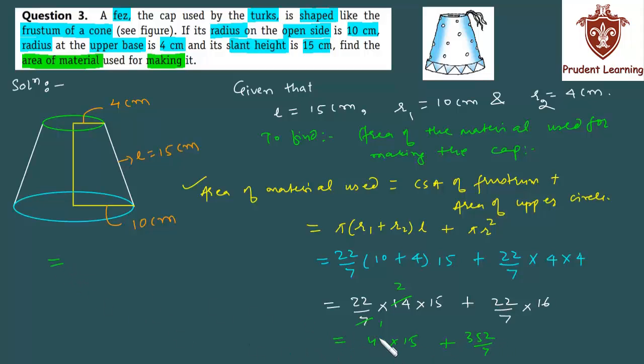Now solving this: 44 × 15 is 660 and 352/7 is 50 and 2/7. On adding these two numbers we have 710 and 2/7, and since we have calculated the area, the unit must be centimeter square. So finally we have the area of material used to make the cap is 710 and 2/7 cm².